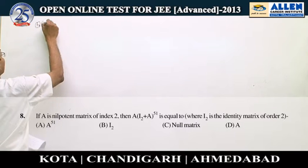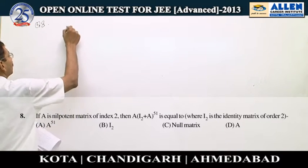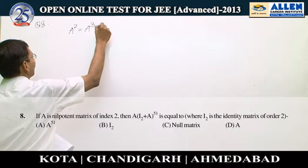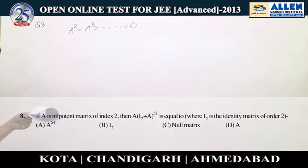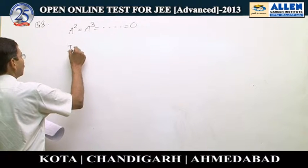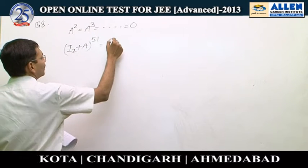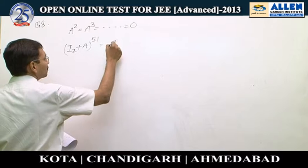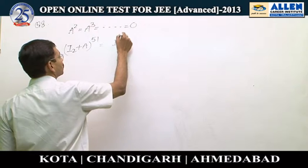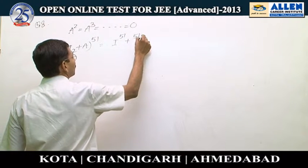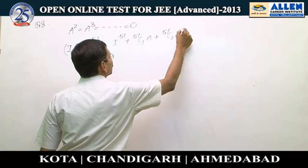Question number 8. A is a nilpotent matrix of index 2, which implies A², A³ and all higher powers give us the null matrix. If we expand (I₂ + A)^51 binomially, it is I^51 + 51C1·A + 51C2·A² ... — I will write I₂ simply as I.